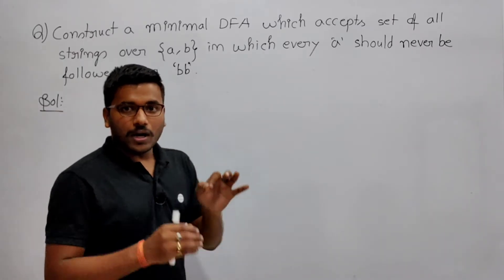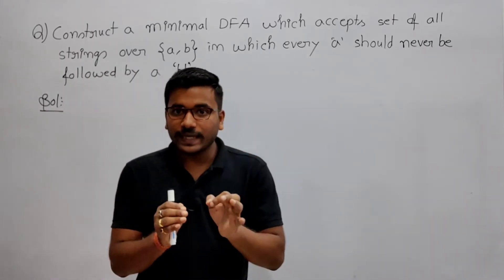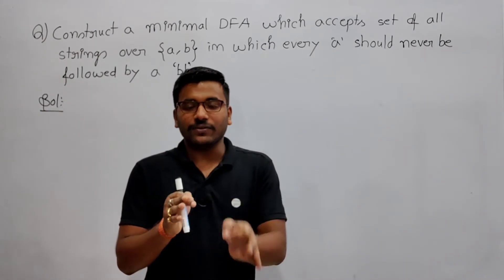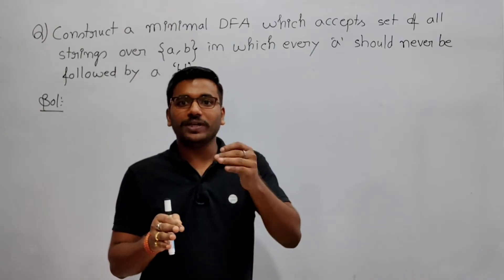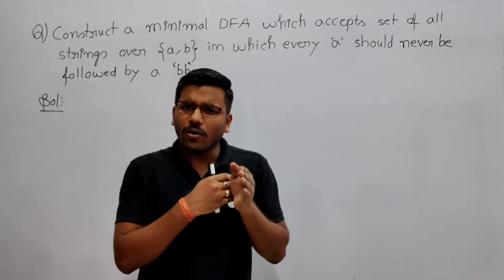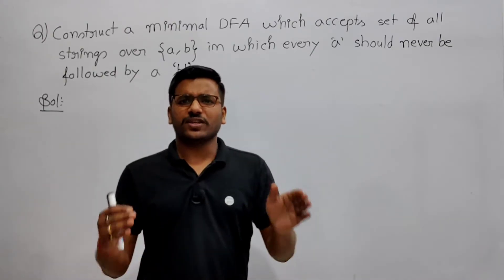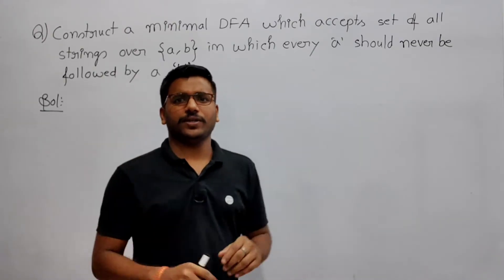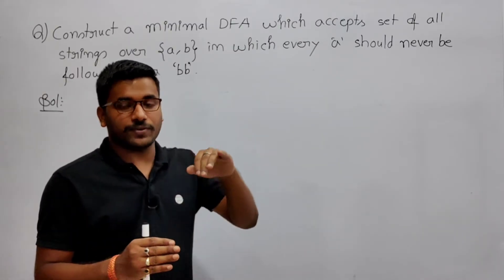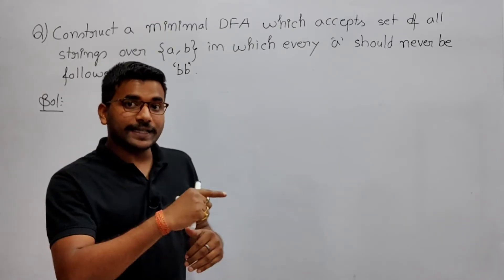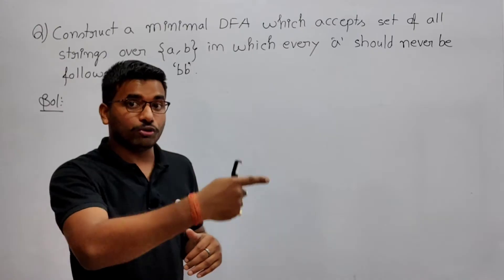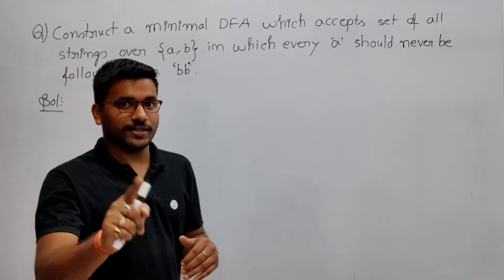What we will do? We will search for: if after 'a' you are having two b's, reject it; otherwise accept all other combinations. I am going to approach this in a reverse way — if I'm getting 'a' and after 'a' it has two b's, reject it.